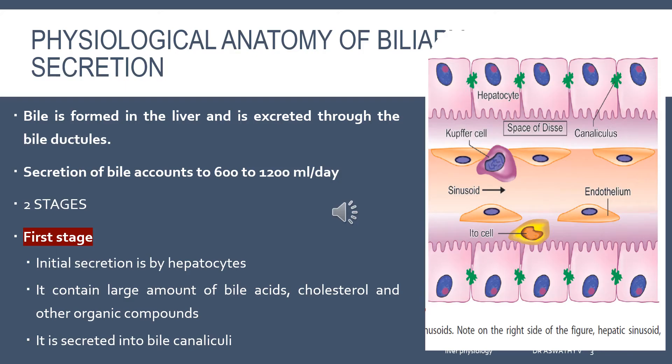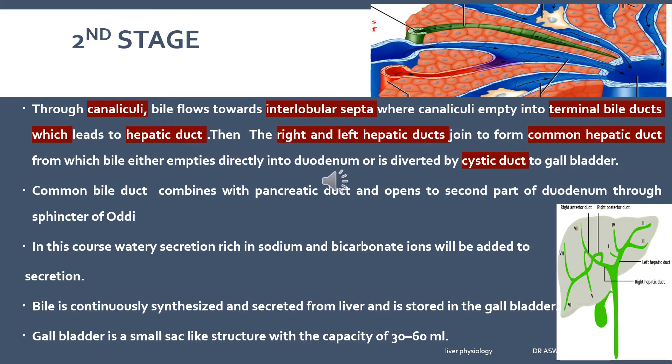The formation of bile takes place in two stages. The first secretion is by hepatocytes, which secrete a secretion rich in bile acids, cholesterol and other organic compounds. This secretion is extruded into the bile canaliculi. Then the second secretion is a watery secretion rich in sodium and bicarbonate ions, secreted by the cells lining the duct system.